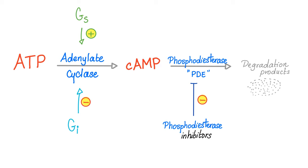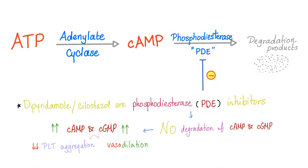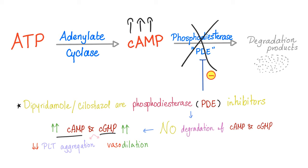Who's going to inhibit phosphodiesterase? Phosphodiesterase inhibitors. Gs-coupled receptors as well as phosphodiesterase inhibitors will seek to increase the level of cyclic AMP. Who's going to inhibit phosphodiesterase? Phosphodiesterase inhibitors — for example, dipyridamole and cilostazol. When they inhibit phosphodiesterase, cyclic AMP accumulates. When cyclic AMP, as well as cyclic GMP, accumulate, they lead to decreased platelet aggregation and increased vasodilation.